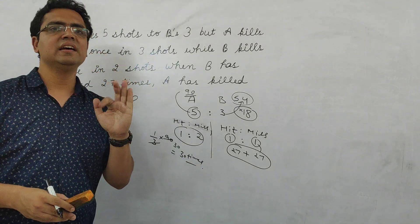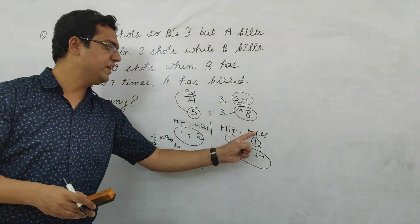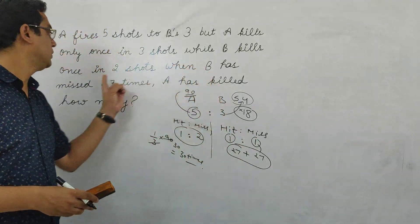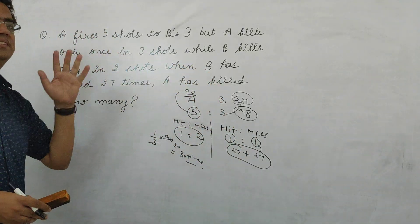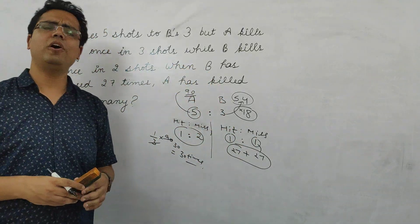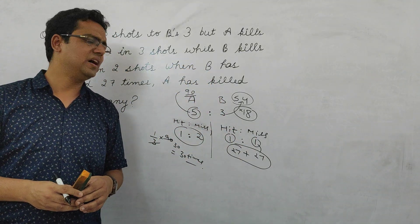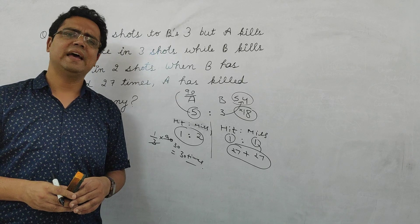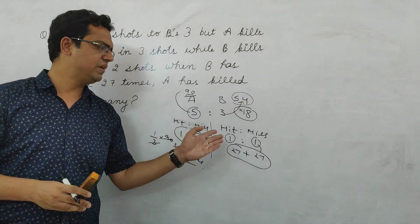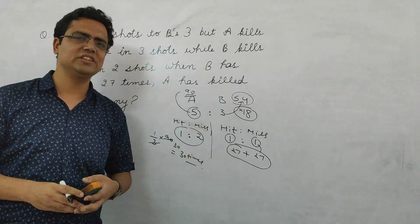A has hit 30 when B has missed 27 times. It's a very good question and a very complicated-seeming question, but it's actually simple — simple ratio and activation. The answer is 30.